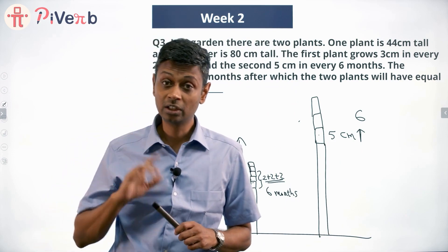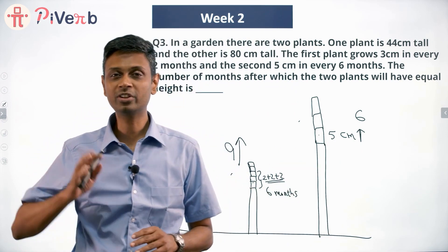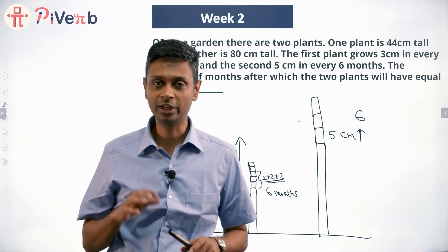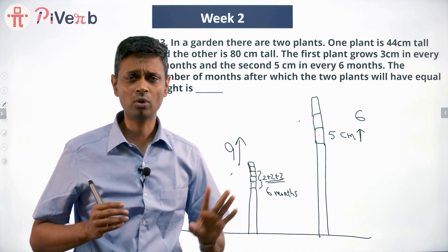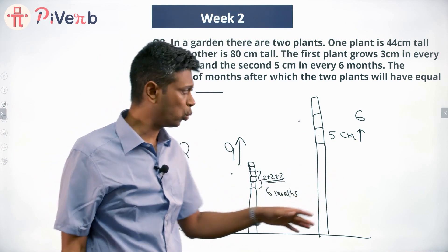First thing we have done is to say, in equal units of time, what is happening. So in a 6-month duration, this grows by 9, that grows only by 5. This is growing faster, so this will catch up with that. However long it might be, this will catch up with that because it will grab on, it's going faster.